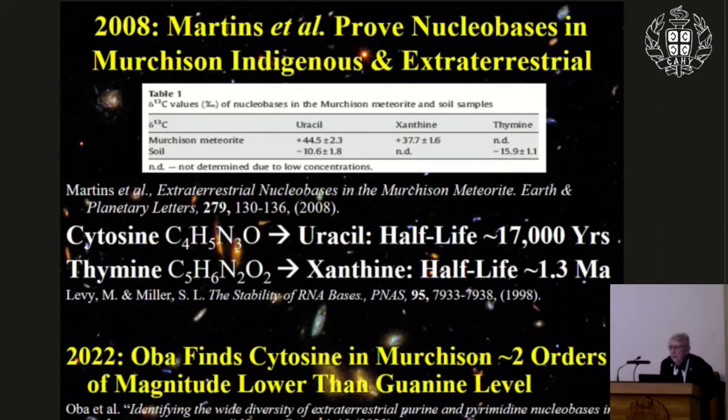Cytosine degrades to uracil with a half-life of about 17,000 years, and thymine degrades to xanthine with a half-life of 1.3 million years. Oba recently published detection of cytosine and thymine in the Murchison meteorite, but at concentrations about two orders of magnitude lower than guanine, consistent with these degradation timescales.